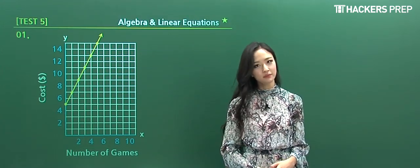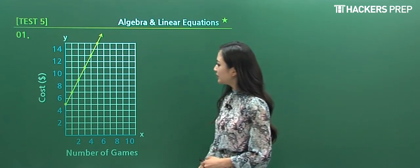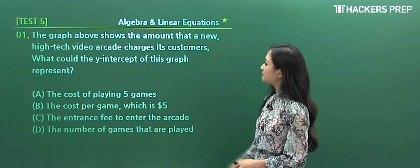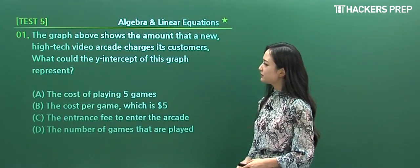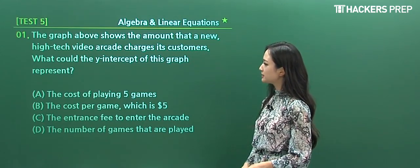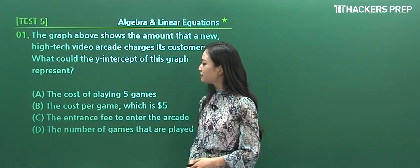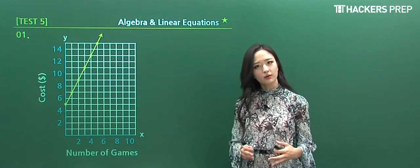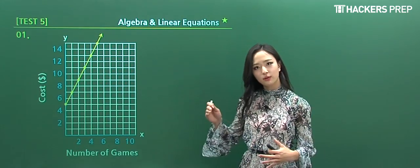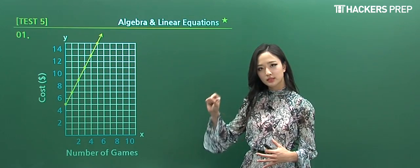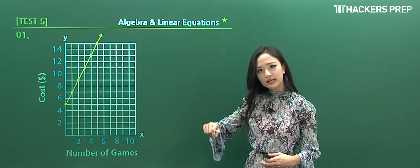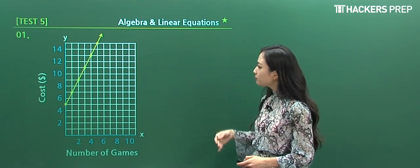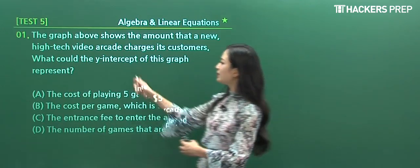This is a linear equation type of question. The graph shows the amount that a new high-tech video arcade charges its customers. What would the y-intercept of this graph represent? When we look at the graph itself, the y-intercept represents a fixed point. So when we incorporate that into this specific scenario, the y-intercept would be some fixed cost or fixed fee.